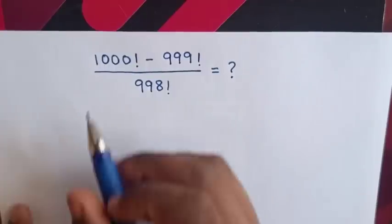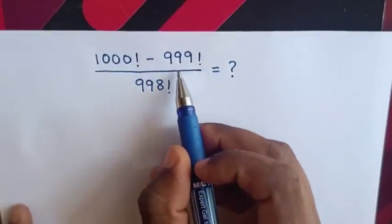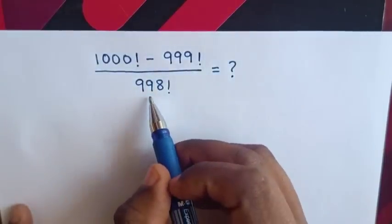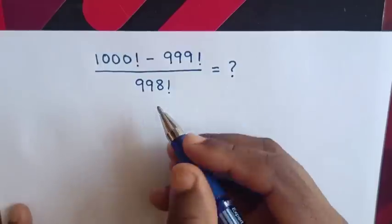Hello! How to solve 1000 factorial minus 999 factorial over 998 factorial?